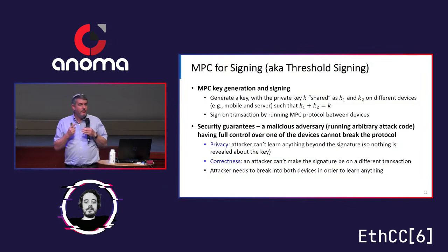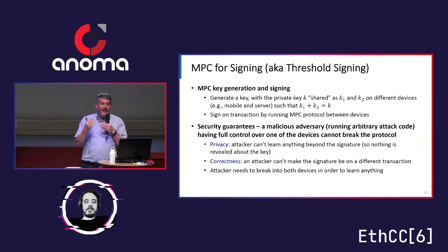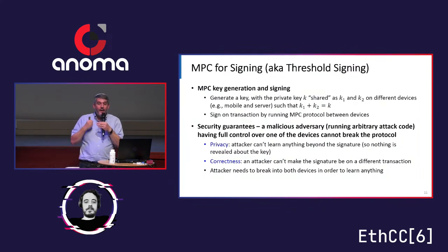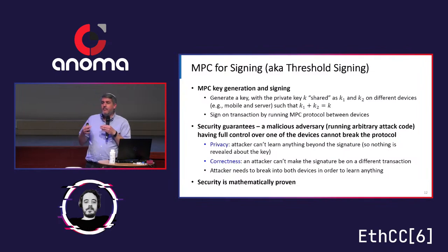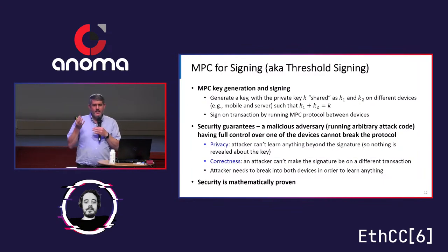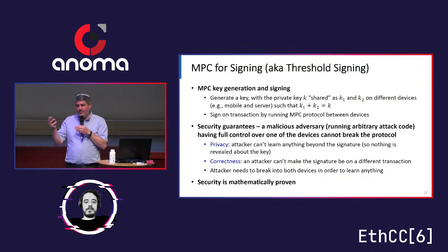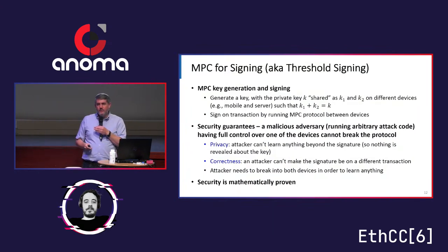The second property, which is arguably even more important here, is correctness. Even if one of the parties is corrupted, they can't make the result of the signature be something I didn't agree to. I might agree to transfer 10,000 USDC to you, but I don't want you to cheat and actually have it result in you getting a million USDC. Correctness guarantees that only what I agreed to sign on will actually be signed, and nothing else. Importantly, security is mathematically proven — these aren't hand-waving techniques. We have a very strong theoretical foundation and are able to formally prove security, though we have to be careful that the proof is validated and the protocol actually implemented matches exactly what has been proven.